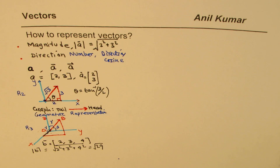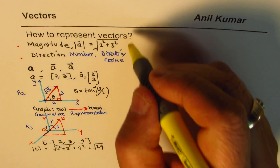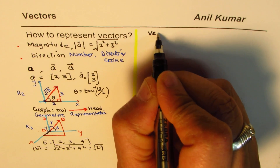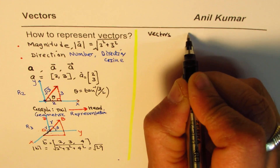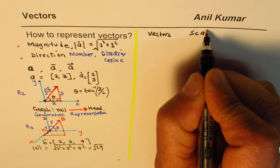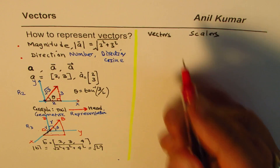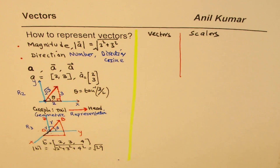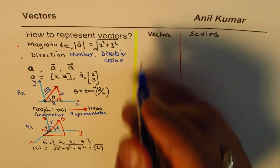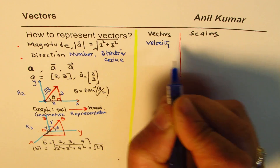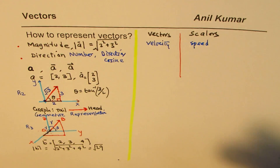That gives a fairly good idea about vectors — they have both direction and magnitude. We can also list things which are vectors and things which are not vectors. Things without direction are called scalars. Vectors and scalars are two fundamental groups. For example, velocity is a vector and speed is a scalar.